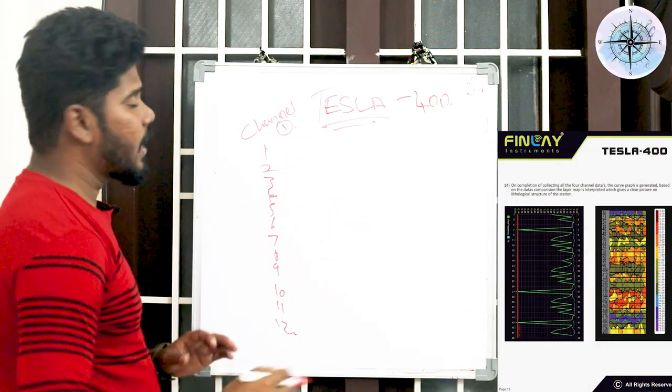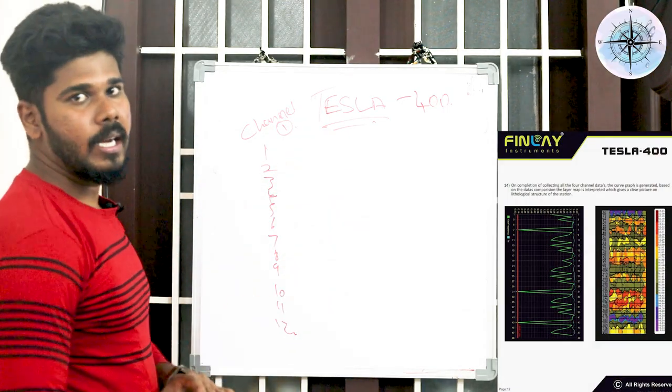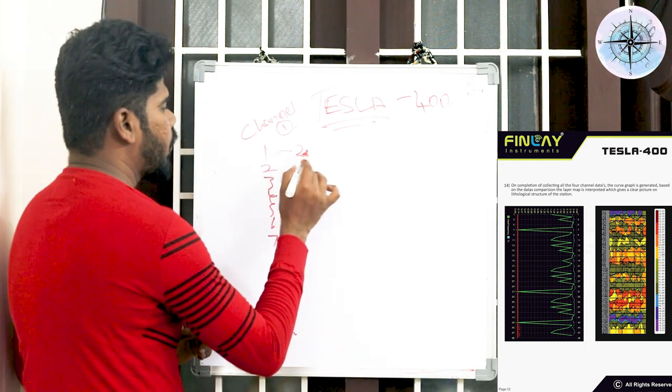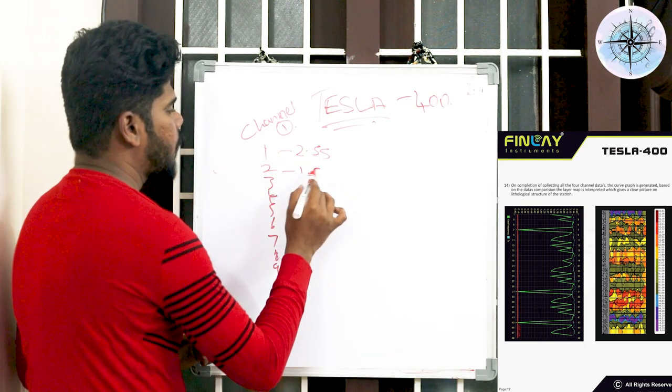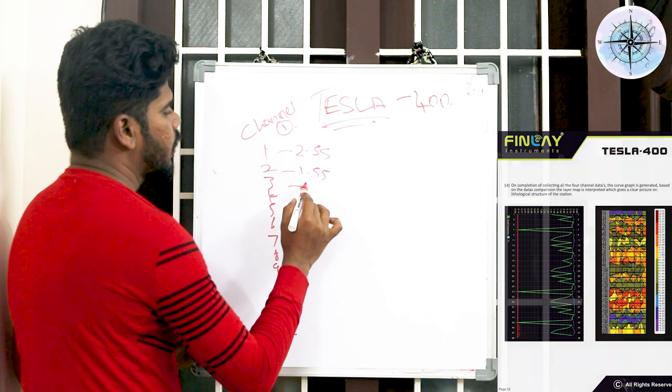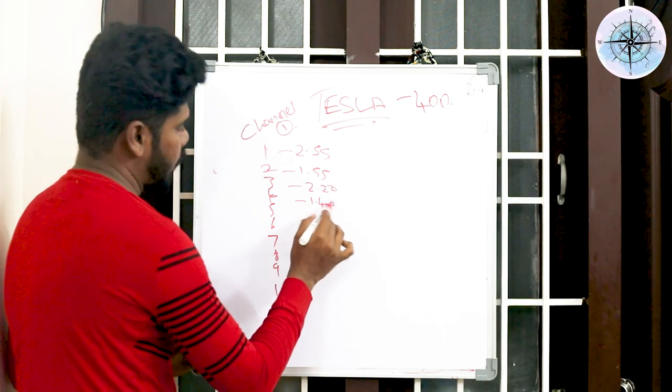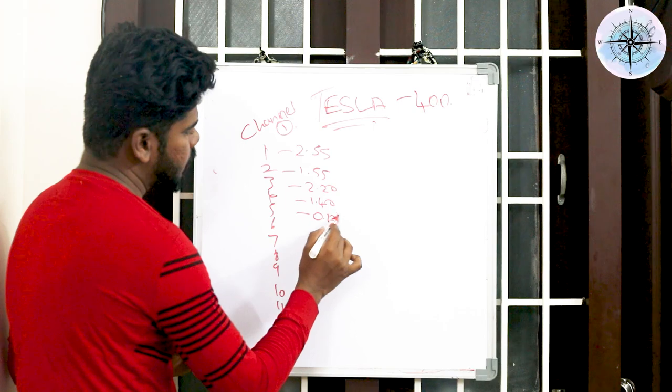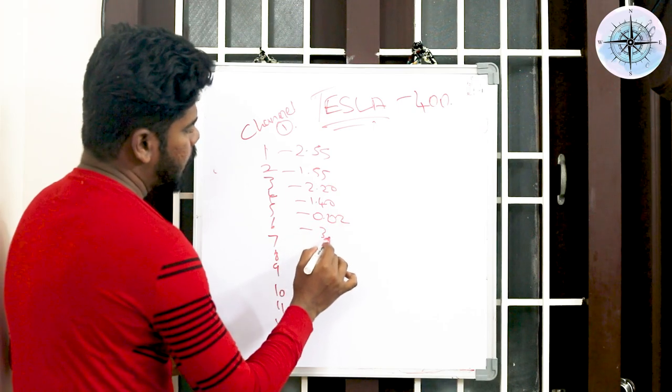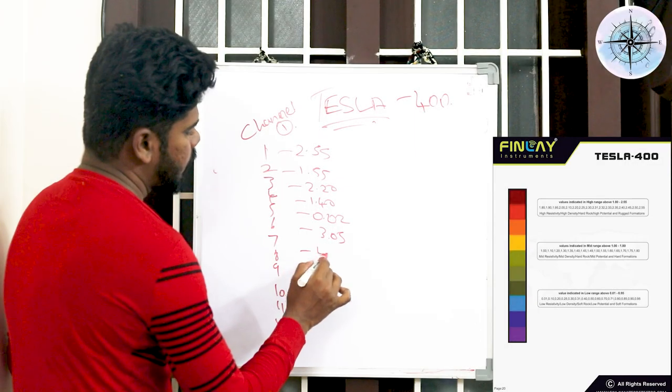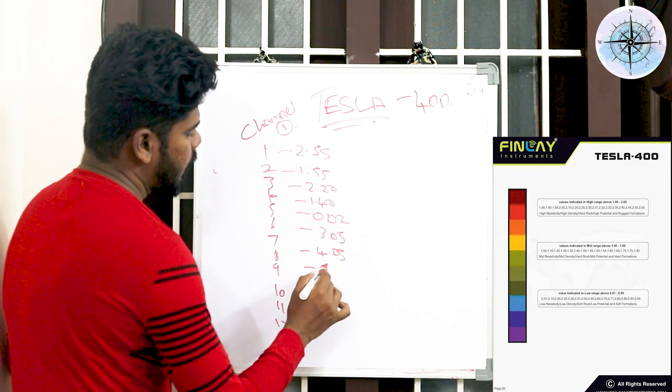So for example, the twelve data's were 2.5, 1.5, 2.2, 1.4, 0.02, 3.05, 4.05, 5.05.